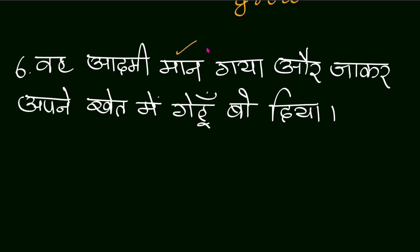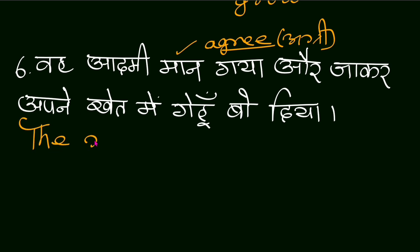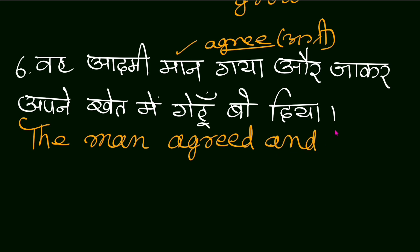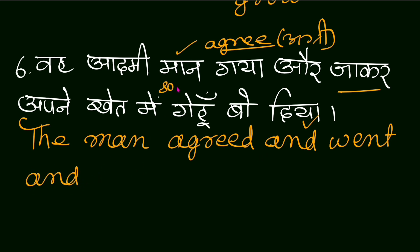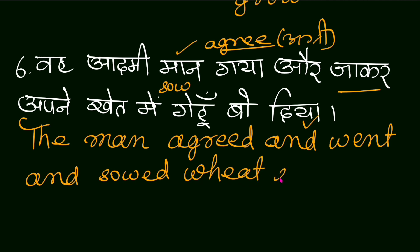The man agreed — 'माना' means to agree. He agreed and went and sowed wheat in his field. When 'jakar' (जाकर, meaning 'having gone') is used, we use 'and.' 'Bona' (बोना) means to sow, so past form is 'sowed.' Full sentence: 'The man agreed and sowed wheat in his field.'